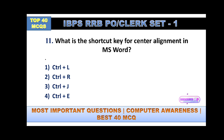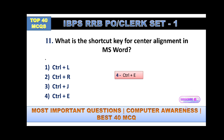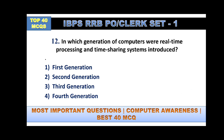What is the shortcut key for center alignment in MS Word? The answer is Ctrl+E. Ctrl+L represents left alignment, Ctrl+R represents right alignment, and Ctrl+J means justification.